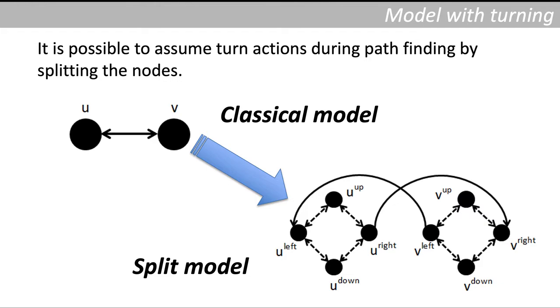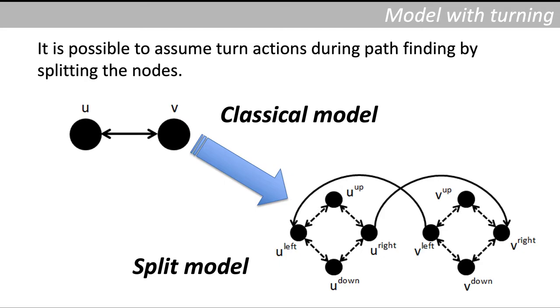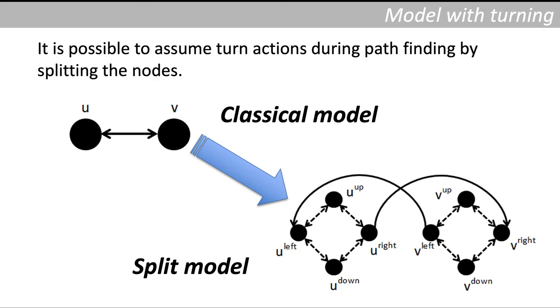We also need to modify the connections between the nodes. So if we want to go from u to v, it's only possible to go from u-right to v-right node. And if we go from v to u, we go from v-left to u-left. The dashed arcs in the picture are corresponding to turning actions. The full arcs are describing the original move actions.